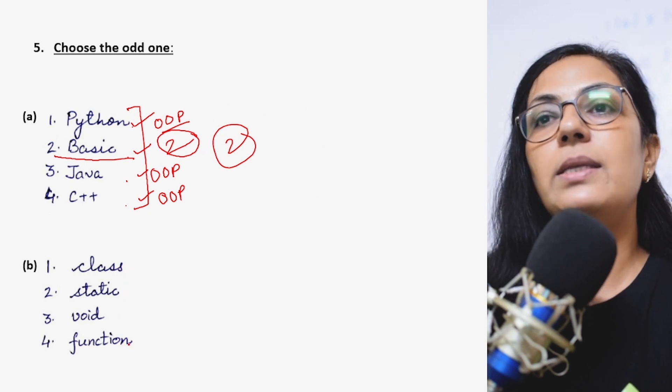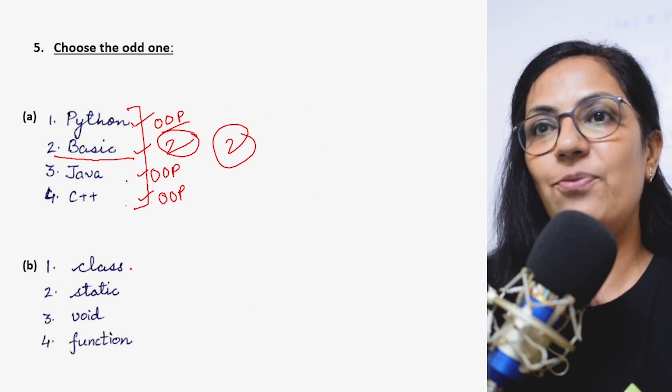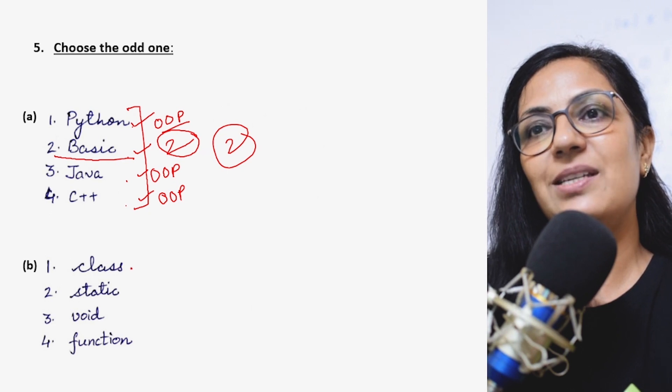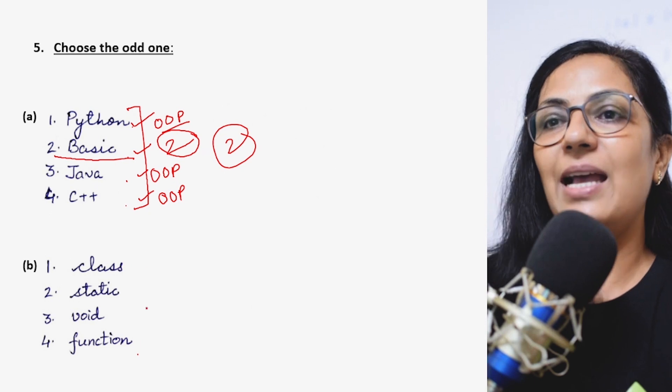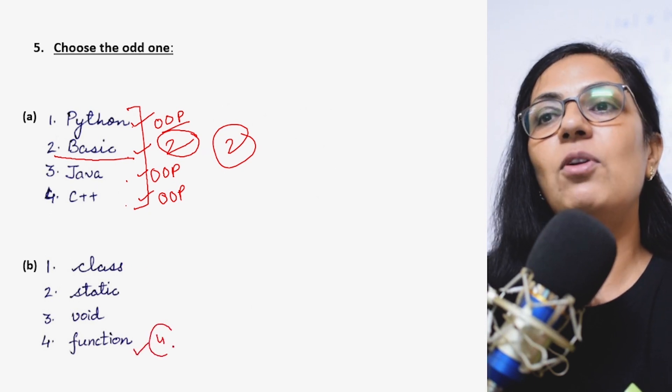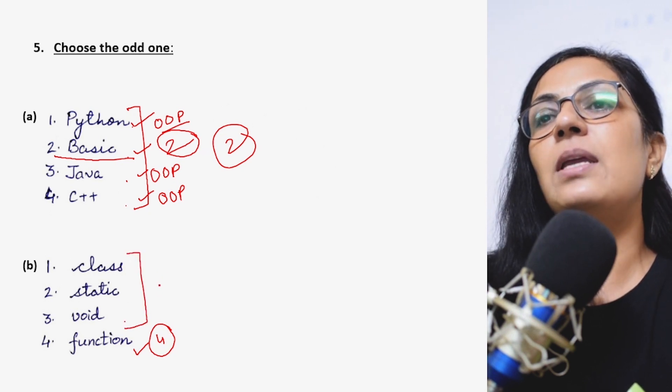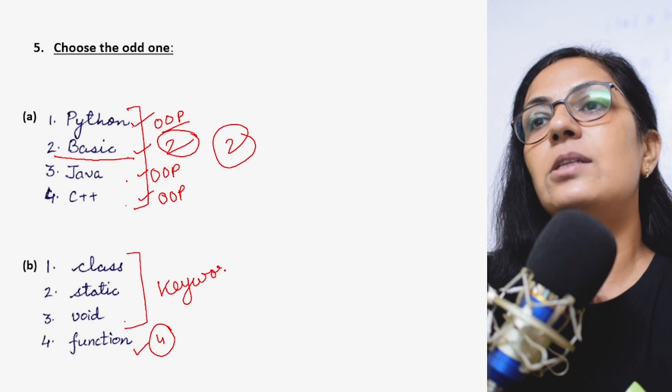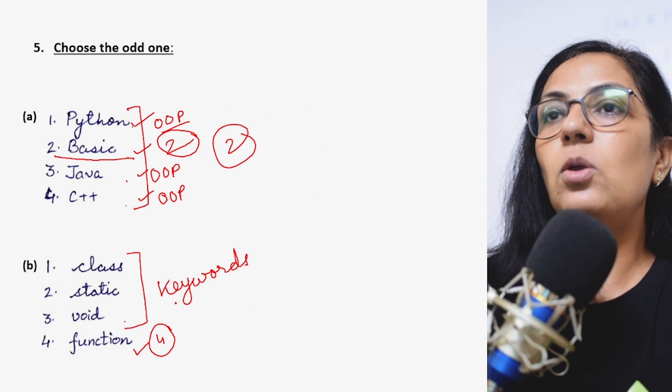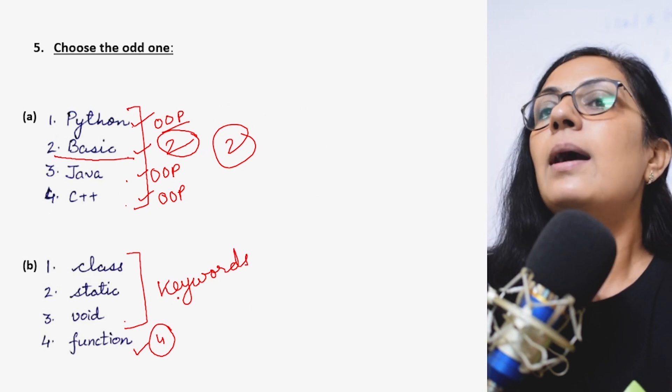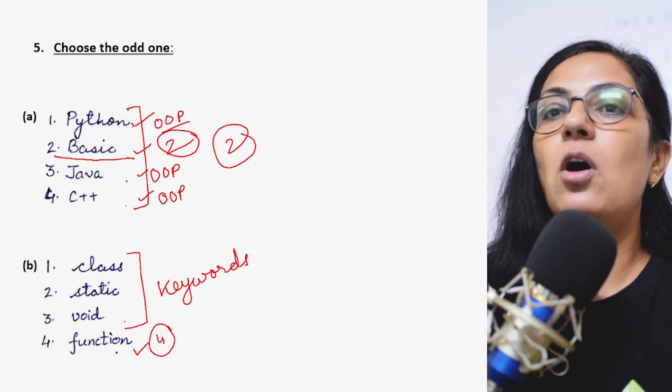Now we move on to the second part. Here four words are given: class, static, void and function. Children, what is your observation? Which is the correct answer as per your observation? Class, static, void or function? As per me it has to be function. Why? Let me give you the answer. Class, static, void - all these three are the keywords. Children, these are the key words or the reserved words which you cannot use for your variable names or class name. These cannot be used as identifiers. So option 4 is the correct answer.